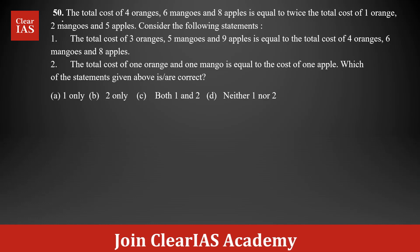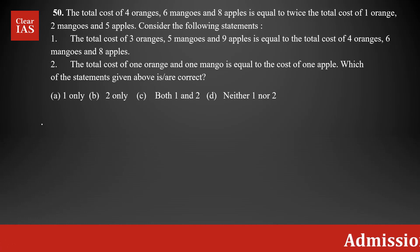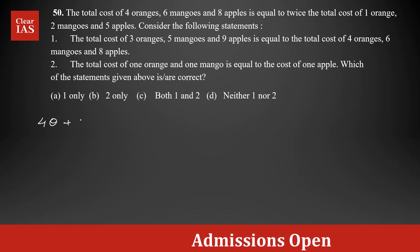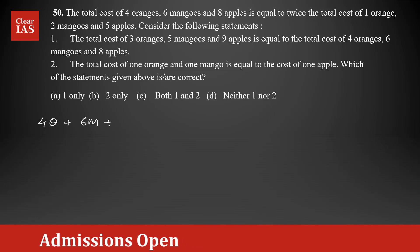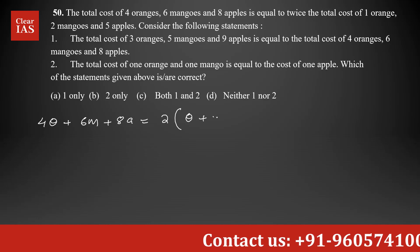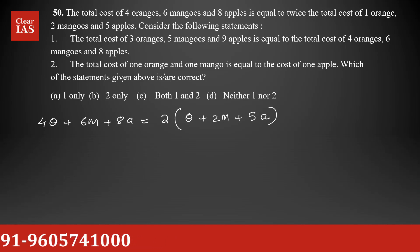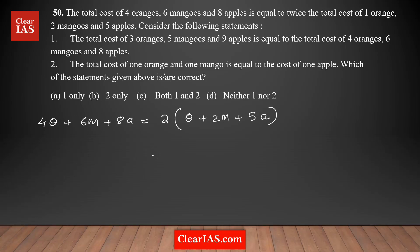The equation given in the first statement: the cost of 4 oranges, 6 mangoes and 8 apples. So it's going to be 4O plus 6M plus 8A is equal to twice the cost of 1 orange plus 2 mangoes plus 5 apples. This is the main equation given. I'm going to simplify it further — open the bracket: 2O plus 4M plus 10A is equal to 4O plus 6M plus 8A.